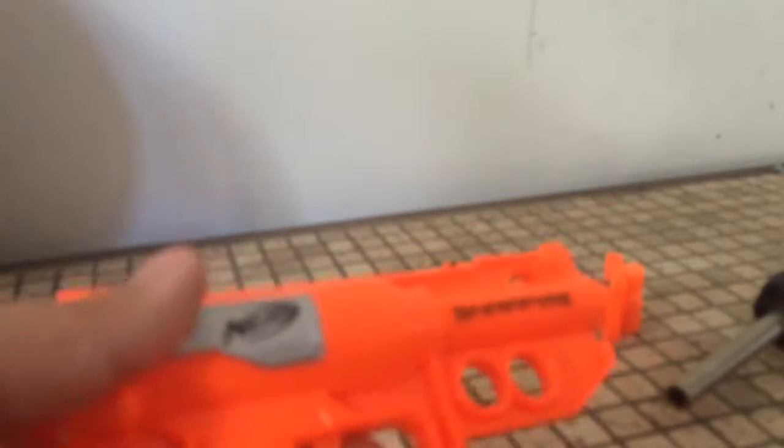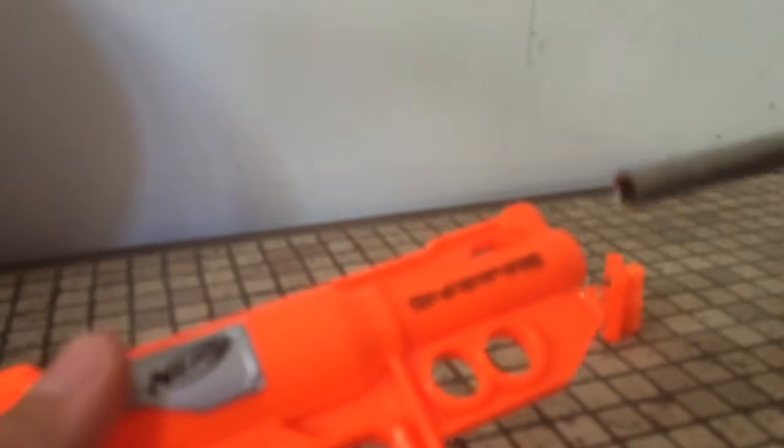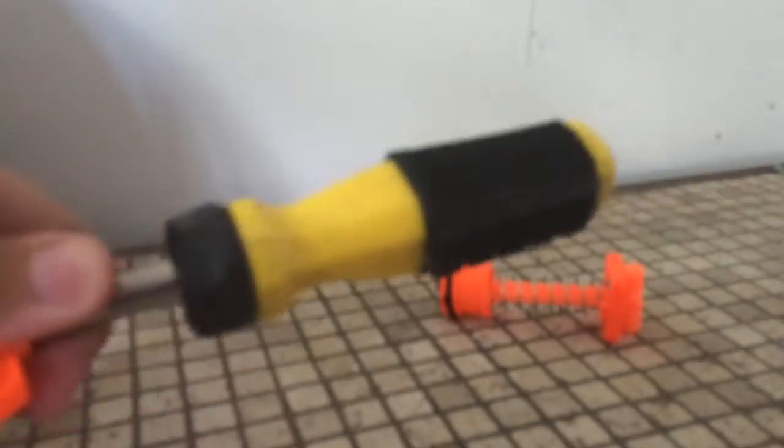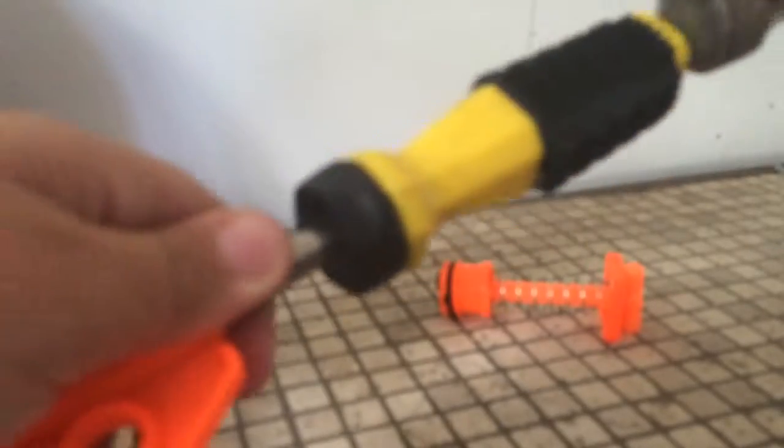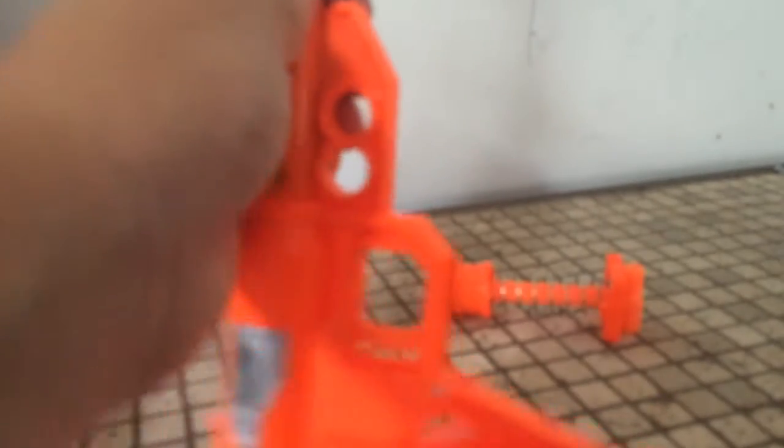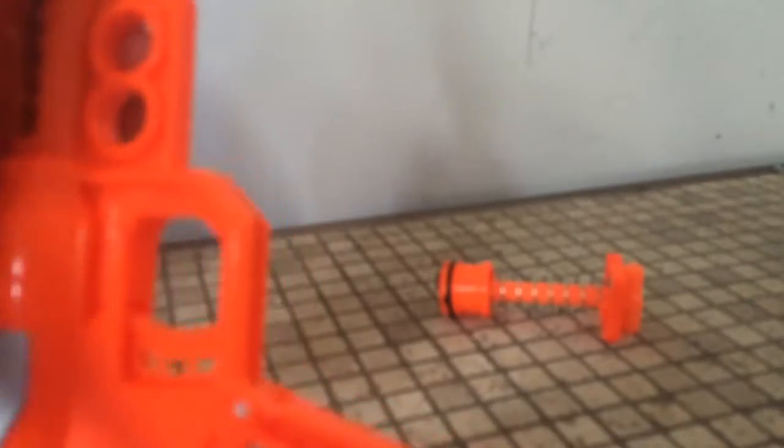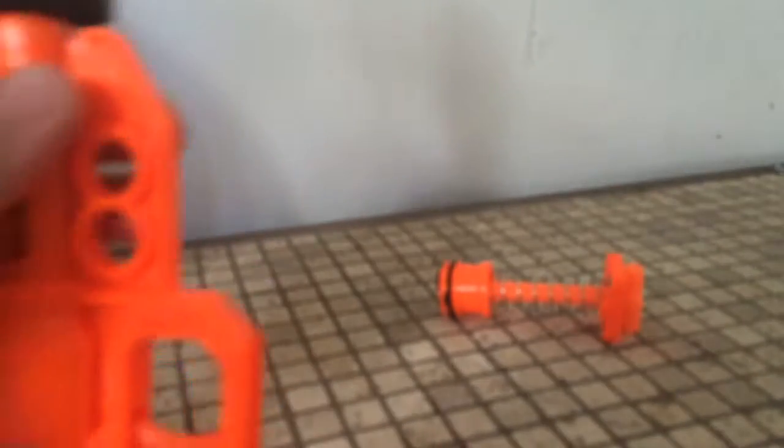Now, what you want to do, you want to take your screwdriver and stick it in the front of the barrel until it can't go any further. From there, you take your hammer and you bash on it. Not like this. You'd rather do it like this standing up. I'm just showing the camera. And you do that until the air restrictor goes down to the bottom.